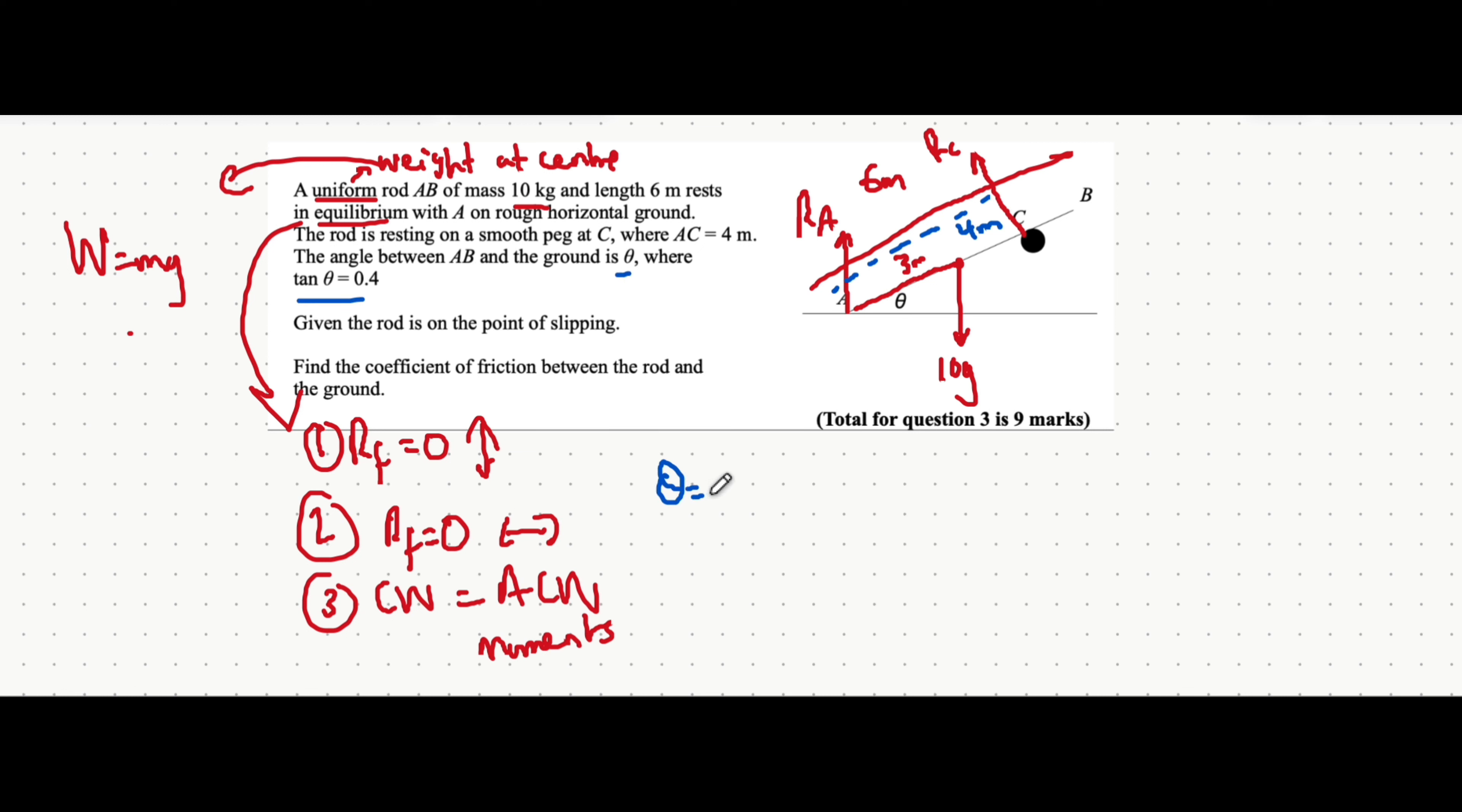You might want to find the value of theta because it looks like you're going to have to deal with that angle later on. So inverse tan, making sure your calculator is in degrees mode by the way, is equal to 21.8 degrees.